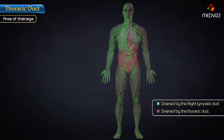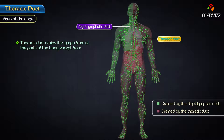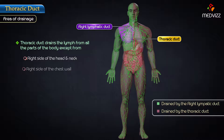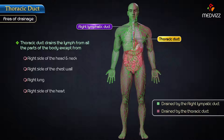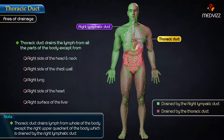Area of drainage. The thoracic duct drains the lymph from all parts of the body except the right side of the head and neck, right side of the chest wall, right lung, right side of the heart, and right surface of the liver. Note: The thoracic duct drains lymph from the whole body except the right upper quadrant, which is drained by the right lymphatic duct.